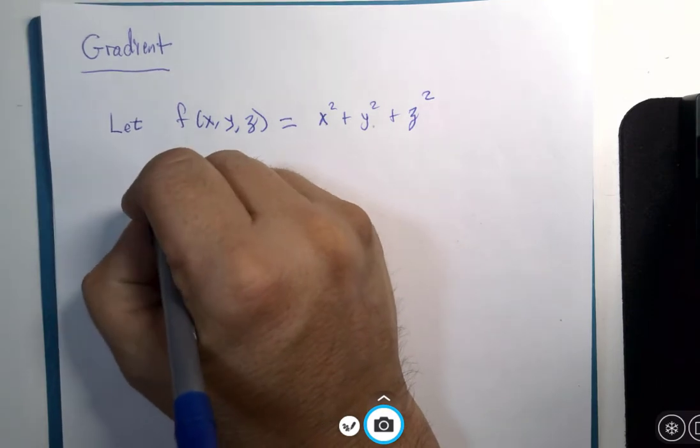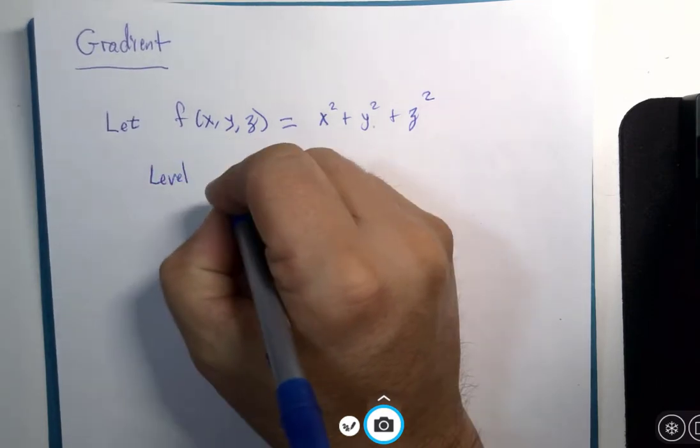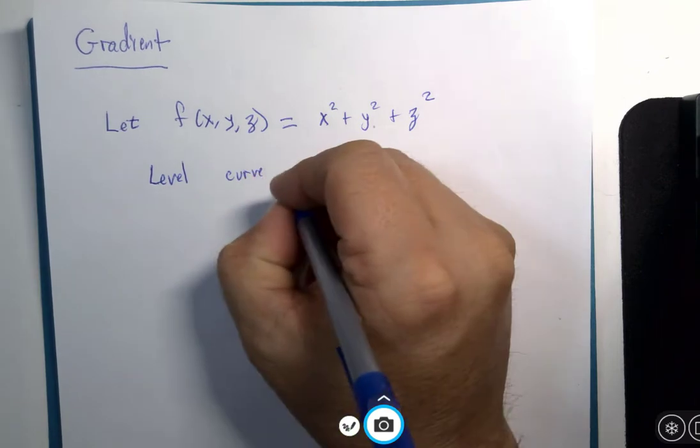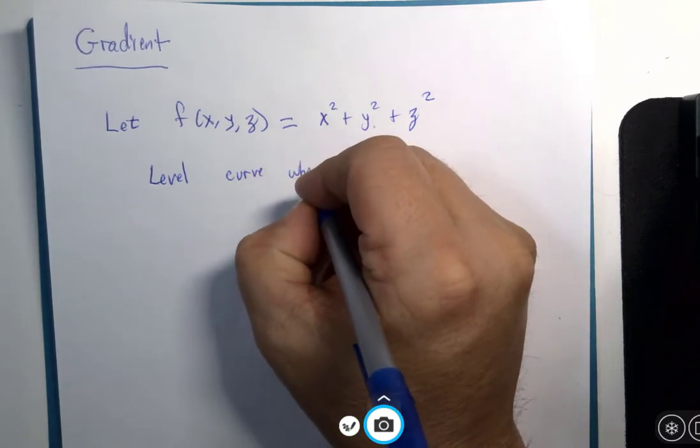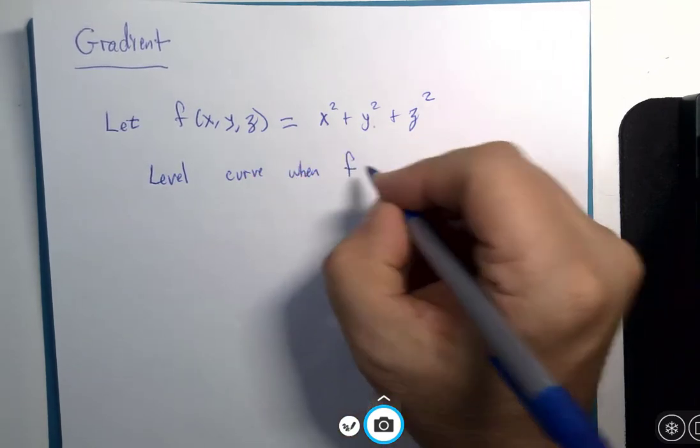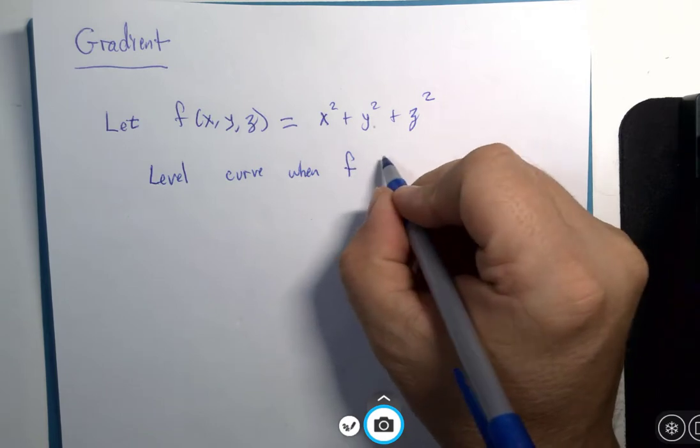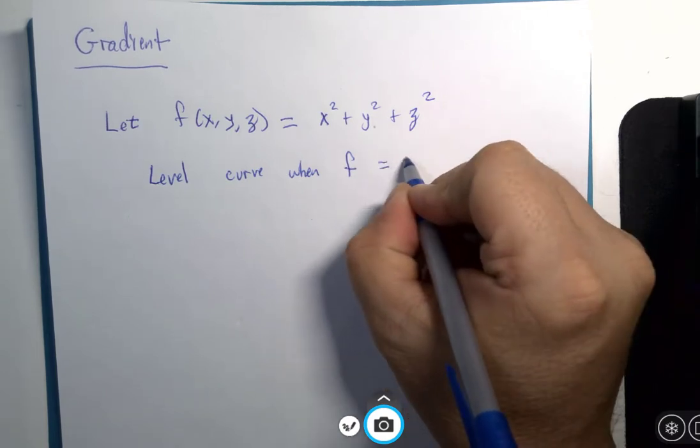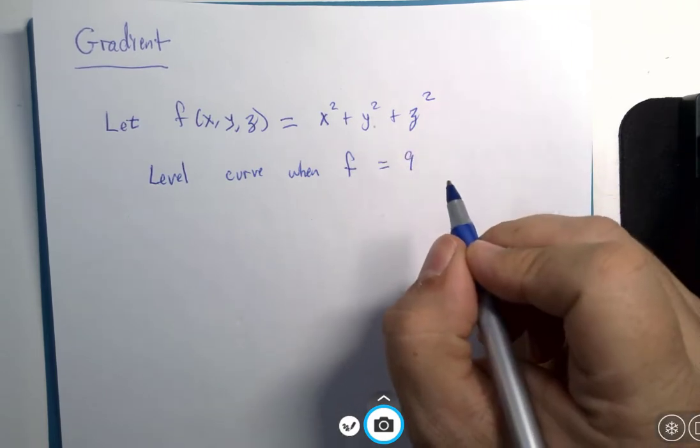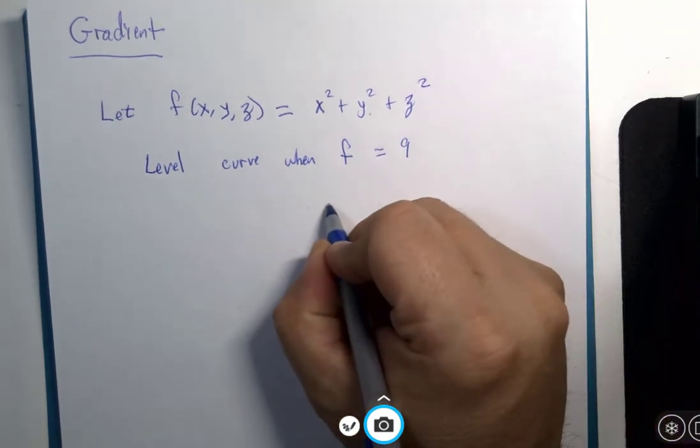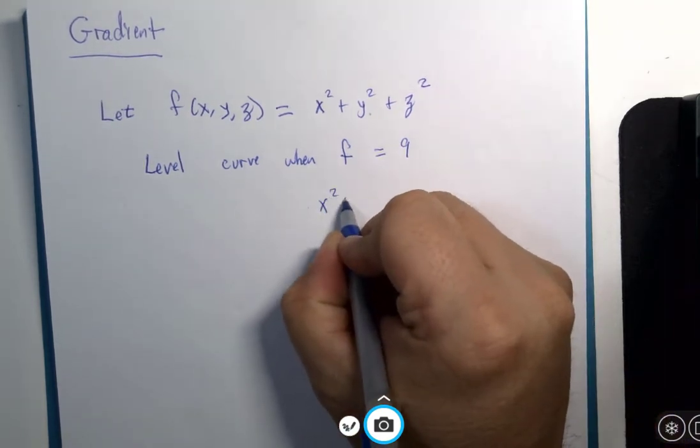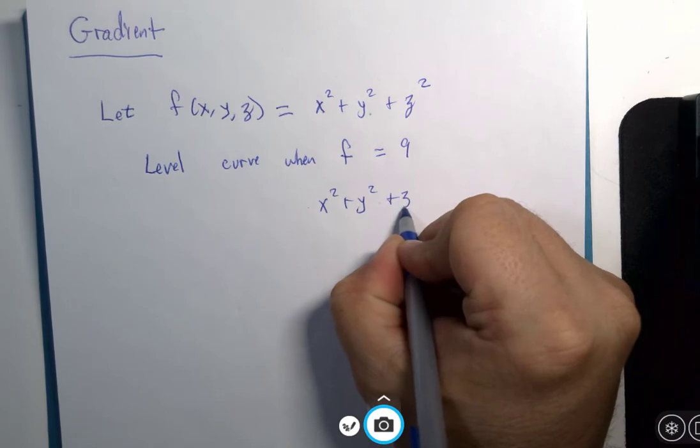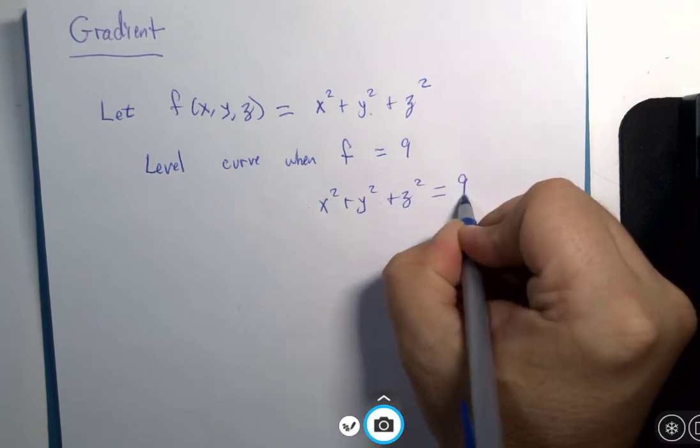So, we're going to start by looking at the level curve when the function f is equal to 9. Or translation, x squared plus y squared plus z squared is equal to 9.